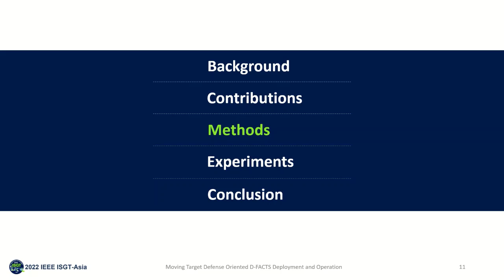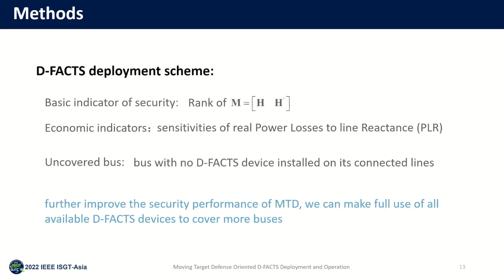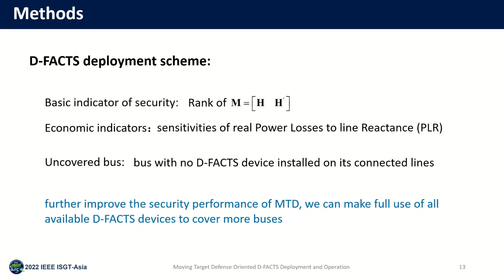I will introduce the method in our study. The method we proposed can be summarized in two steps: Defect Deployment Scheme and Operation Scheme. Firstly, we use the rank of the joint matrix IM as the base indicator of security. IM consists of the system information before and after MTD. Increasing the rank of IM can improve the security of the system. We then choose the deployed defect lines that can increase the rank of IM and are more sensitive to the power flow.